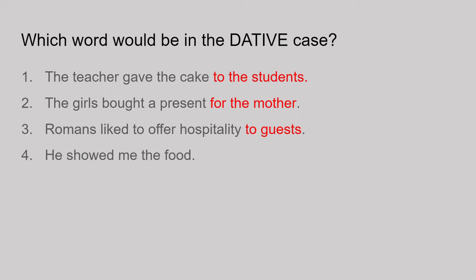Finally, number four — this one is a bit trickier: 'he showed me the food.' There's no 'to' or 'for' here — I have tricked you! However, one of these words is still a dative. The Latin would be very clear here — we'd see from the ending which it was. In English we're just a bit lazy. The nominative is 'he,' the food is the accusative as it's having the verb done to it, and the indirect object is 'me.' Imagine the sentence said 'he showed the food to me' — so it's clear that 'me' should be in the dative.